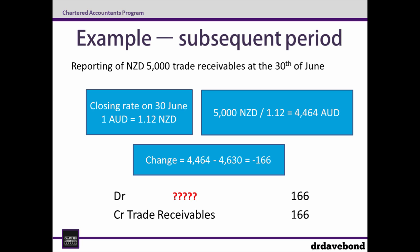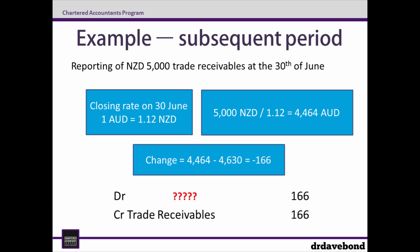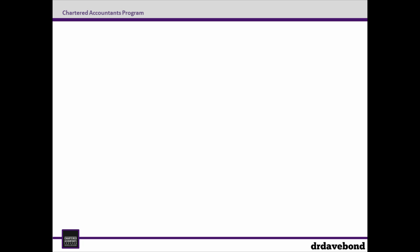But what account gets debited? This is where paragraph 28 can help out. Specifically, exchange differences arising on settlement of monetary items, or in translating monetary items at rates different from those at which they were translated on initial recognition during the period or in previous financial statements, shall be recognized in profit or loss in the period in which they arise. The key thing here is that any gains or losses go to profit or loss, and these happen either when the monetary item gets settled — for example when the customer pays for the inventory — or when the amount is translated at the end of the reporting period. This means that the account which gets debited in this case is foreign exchange loss, and that covers accounting for a foreign currency transaction involving a monetary item.